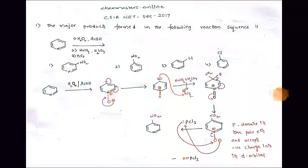Welcome to chemmasters.online. This question is from CSIR NET December 2017. The question asks for the major product formed in the following reaction sequence: the substrate is pyridine, reacted with H2O2 and acetic acid, then HNO3 and H2SO4, then PCl3. What is the product? Check the given options.